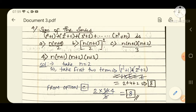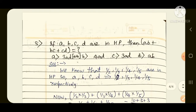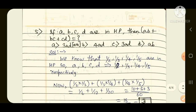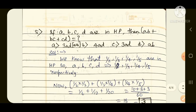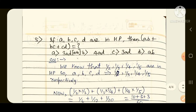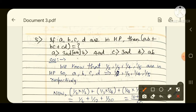Now question number 5, with many examples for your practice. Here A, B, C, D are in HP. Then find the value of AB + BC + CD. The options are: option A: 3AD into (A plus B); option B: 4AD; option C: 3AD; option D: AB. First, you need to take four numbers in HP — HP means harmonic progression.